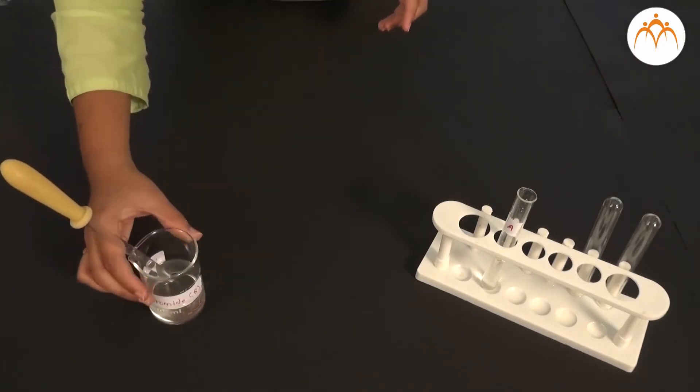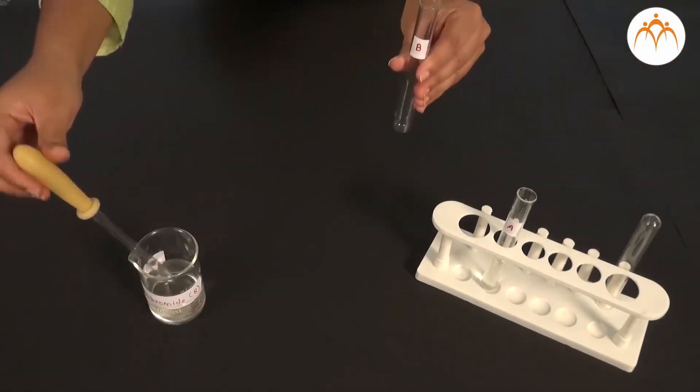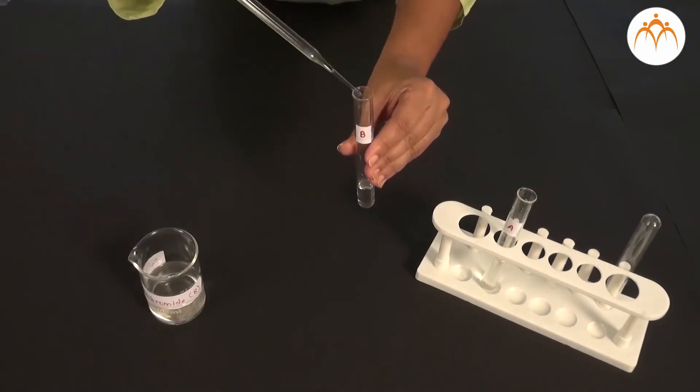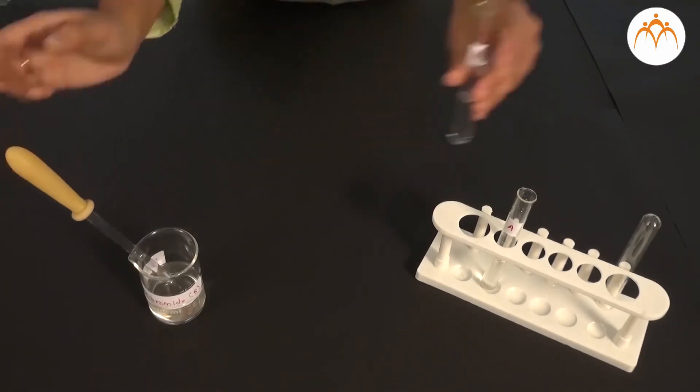We keep these test tubes A, B and C on the test tube stand and add a few drops of silver nitrate to these three test tubes. Silver nitrate or AgNO3 is a reagent and it reacts with the solutions in test tubes A, B and C.